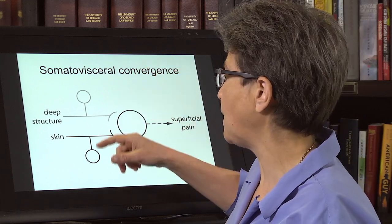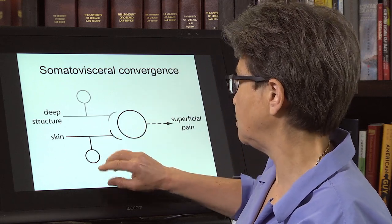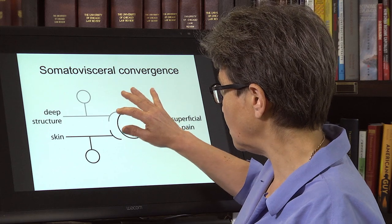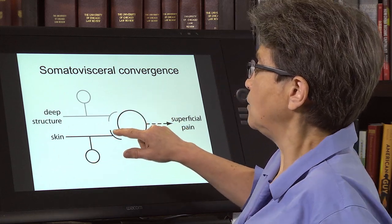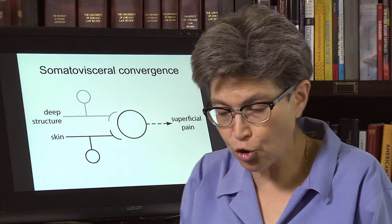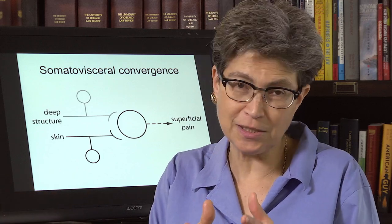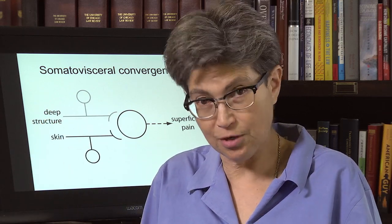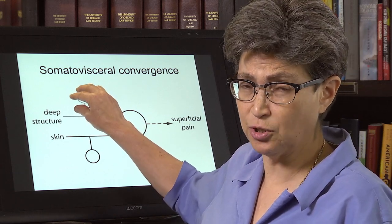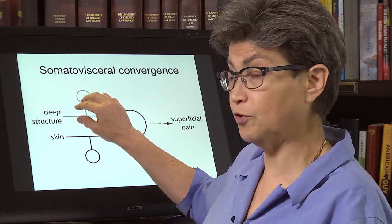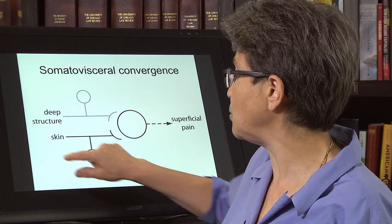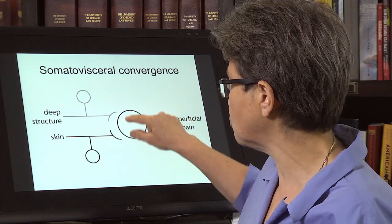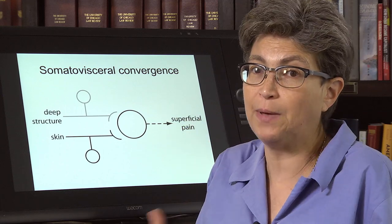Let's think about the heart. If this deep structure is the heart — say, the left ventricle — it converges with a stretch of skin. When you're a baby and you're learning to hook up your somatosensory system, you'll never know that your heart was stimulated, because your heart won't be stimulated. These visceral afferents are basically silent until unusual circumstances — hopefully silent for all of your life. But you will hook up this more superficial primary afferent.